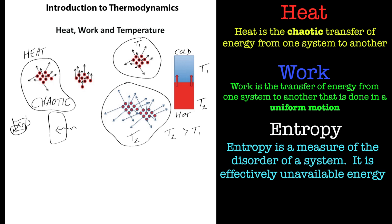So to summarize: heat is the chaotic thermal motion of atoms and molecules transferred between systems. Work is the uniform motion of atoms and molecules, and we can actually use it — this is where thermodynamics is really powerful, because we can transfer heat into work. Temperature is the intrinsic chaotic motion of molecules and atoms that can't really be harnessed, and it's more to do with entropy, which we'll talk about later. That's it for now — bye!